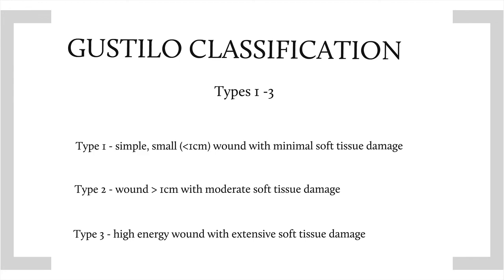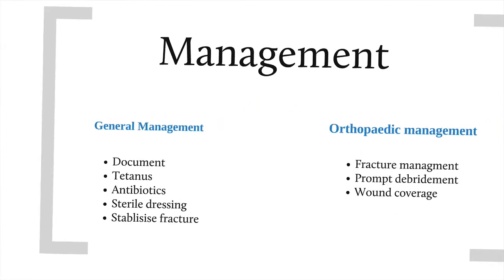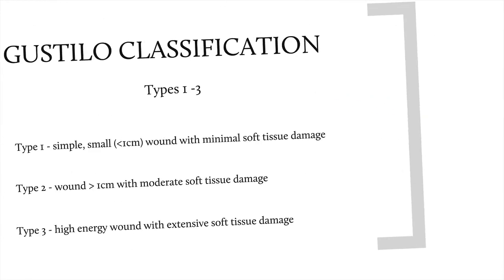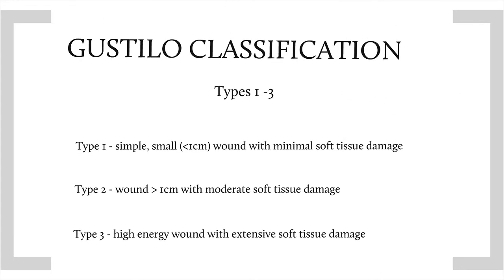Type 3 is subdivided into A, B, and C. Type 3A: there is adequate soft tissue to cover the wound. Type 3B: there is inadequate soft tissue to cover the wound. Type 3C: there is an arterial injury.